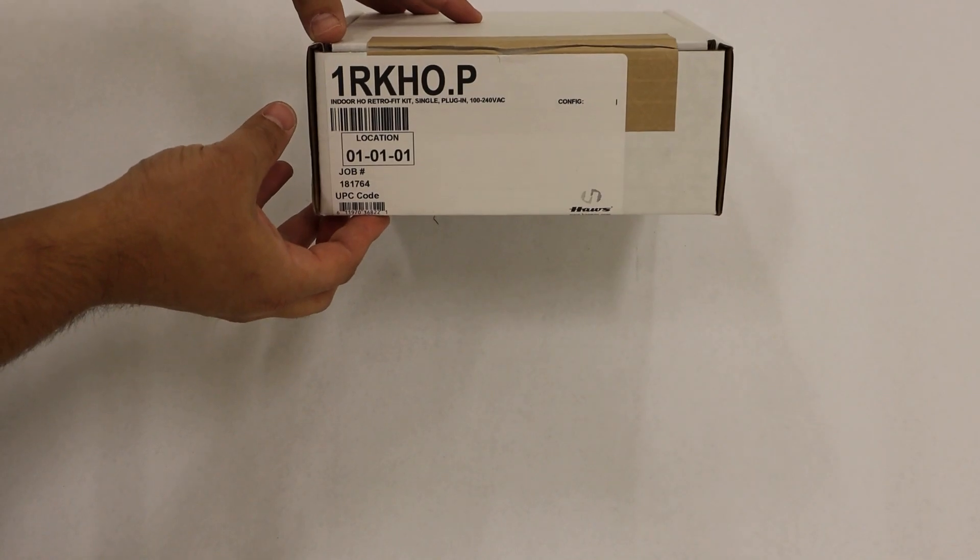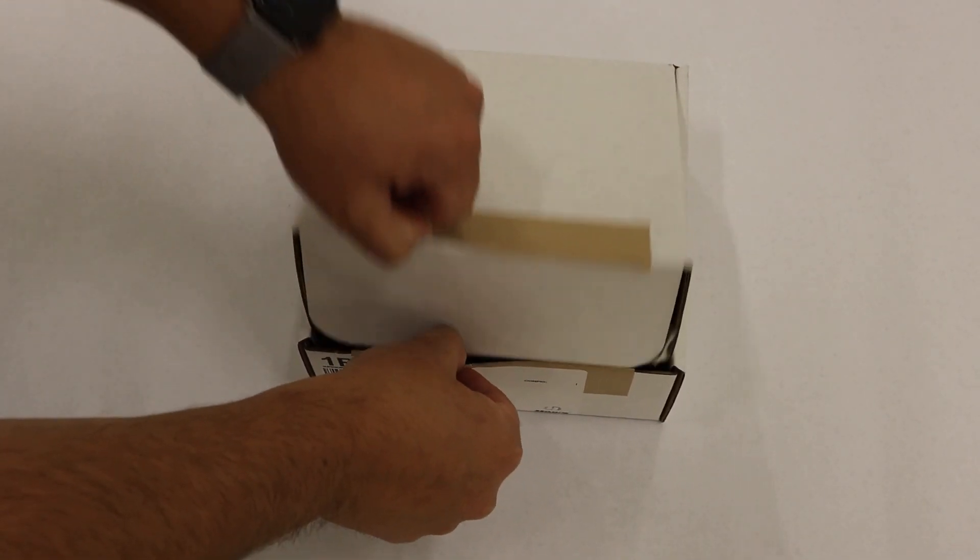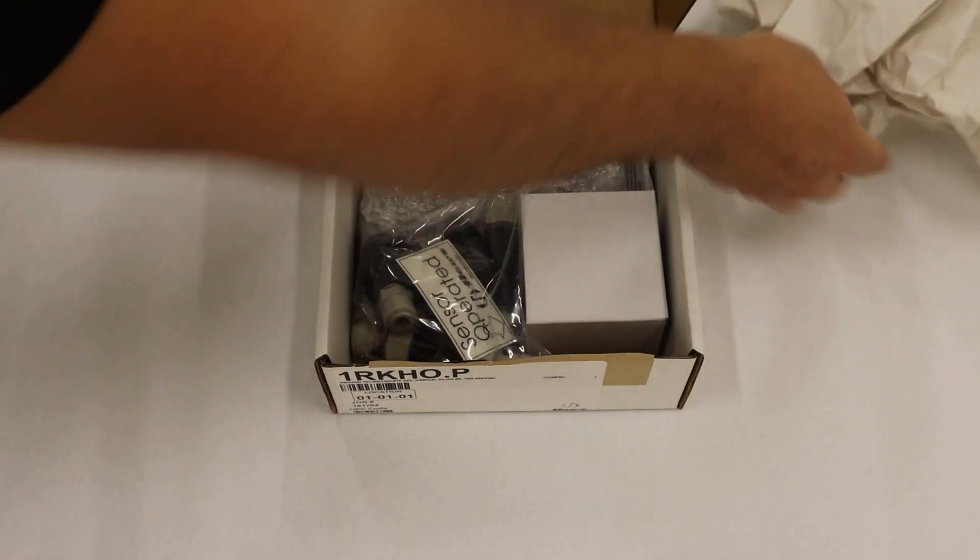Begin by removing the contents of the 1RKHO.P and ensure that all parts are accounted for. If installing the H version of the kit, the only difference will be the power supply.